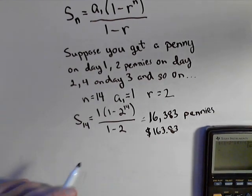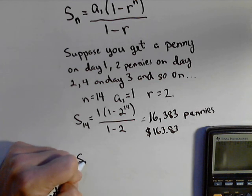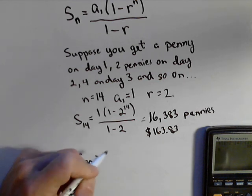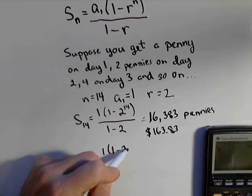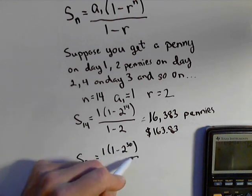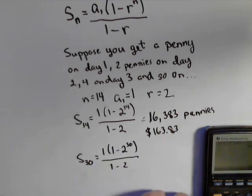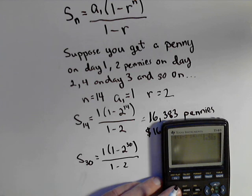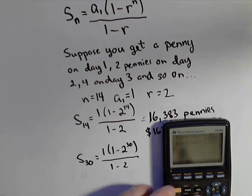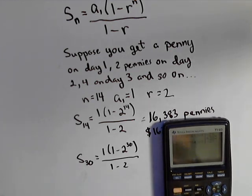What if we did this for a 30 day month? So S sub 30, the only thing that changes is one times one minus two to the 30th over one minus two. So I only have one small adjustment to make in my calculator. I can bring my formula again, change my 14 to a 30.